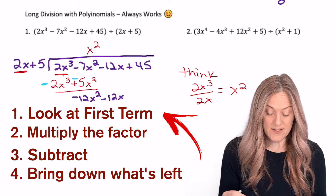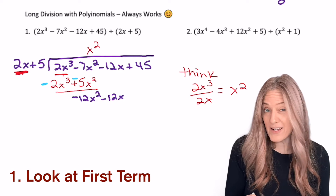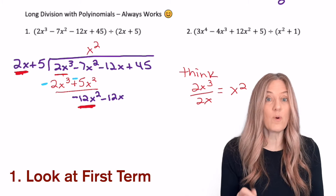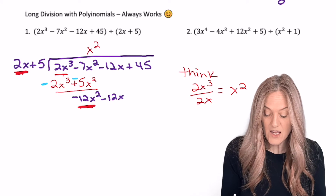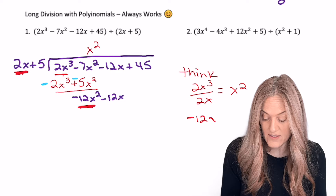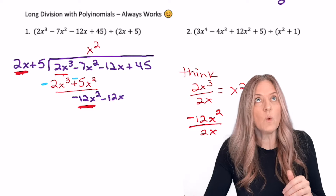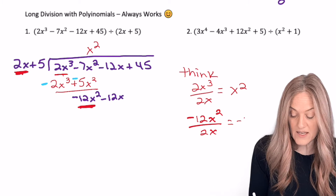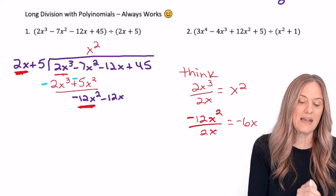Now we repeat the process. We're still looking at that 2x — the first term of the binomial — going into the first term of what's in that next part of the polynomial that we're dividing into. So negative 12x squared. Over here in my think section, I can think: negative 12x squared divided by 2x, because I want to say 2x times what equals negative 12x squared.